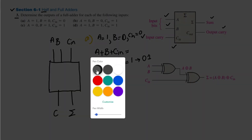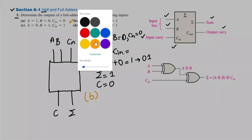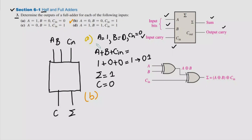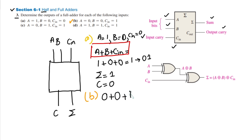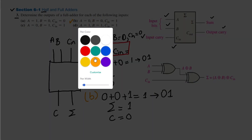For part b, we have A equal to 0, B equal to 0, and C-in equal to 1. Adding them together using the same formula: 0 plus 0 plus 1 gives us 1. Representing it as a 2-bit binary number gives 0 1. So the sum is again 1 and the carry is 0.